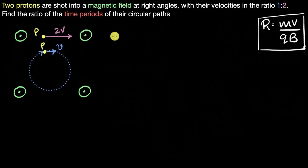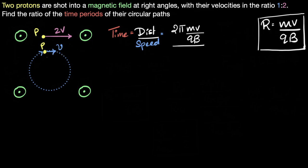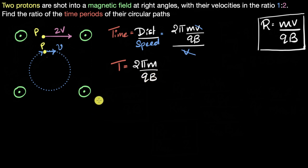Time equals distance divided by speed. Distance is 2πr, and r is mv divided by qB, so time equals 2π times mv over qB, divided by v. The v cancels out, and I immediately have the time period: T equals 2πm divided by qB. I don't need to remember this equation — it follows directly from first principles.